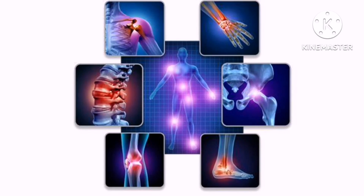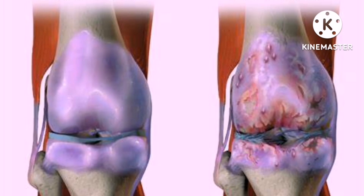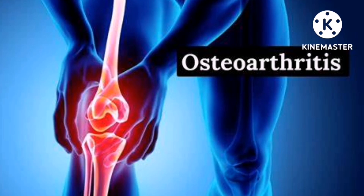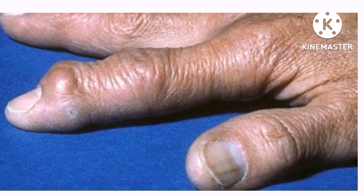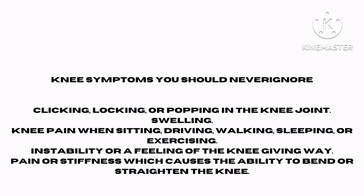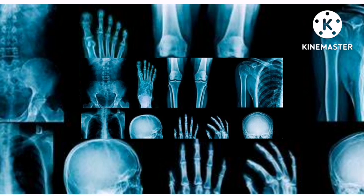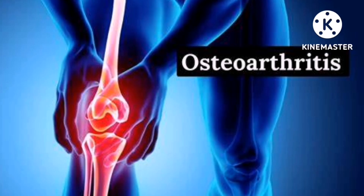A joint has a tough coating that is smooth and slippery — this is called cartilage. Cartilage covers the surface of our bones and helps them move against each other without friction. If the cartilage becomes worn or damaged, the surface becomes rough and the bones begin to rub against each other. The bones may wear away — this is when osteoarthritis has developed, what we call wear and tear. When bones are badly damaged, the tissue inside the joints becomes more active than normal.